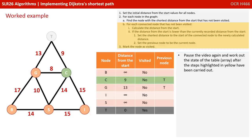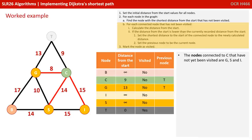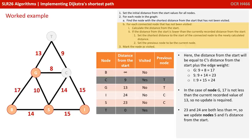The nodes connected to C that have not yet been visited are G, S, and I. The distance from start equals C's distance plus the edge weightings, giving 17, 23, and 24 respectively. For node G, 17 is not less than the currently recorded value of 13, so no update required. 23 and 24 for S and I are both less than infinity, so we update those entries and indicate the previous node as C.